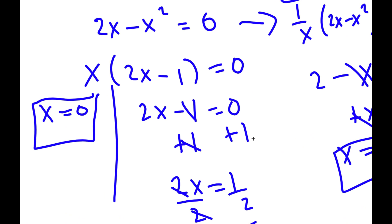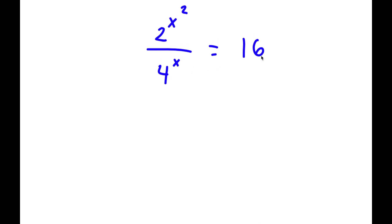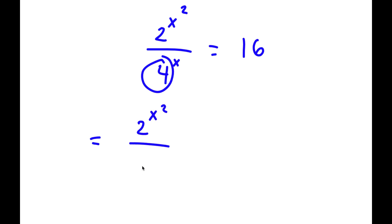In this problem I have 2x squared over 4 to the power of x equals 16. To solve this, I'll rewrite 4 as 2 squared, so I have 2 to the power of x squared over (2 squared) to the power of x equals 16, which I'll rewrite as 2 to the power of 4.